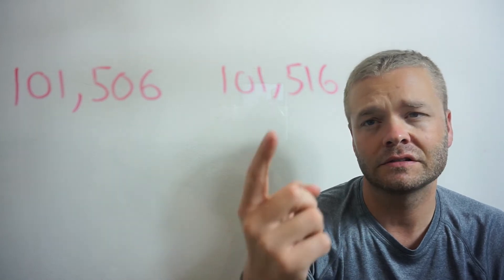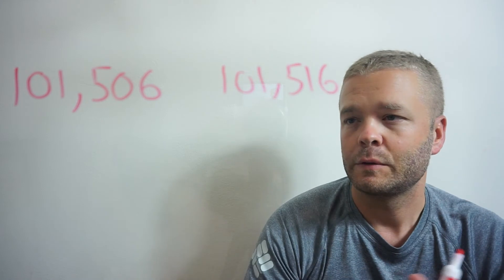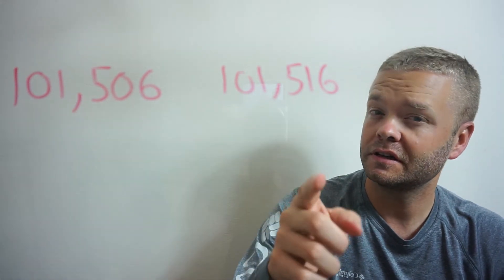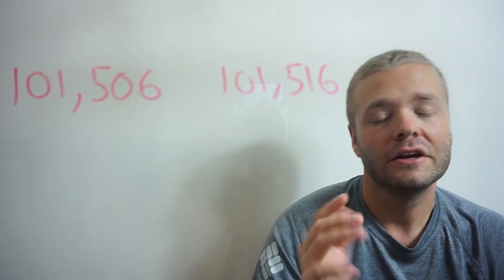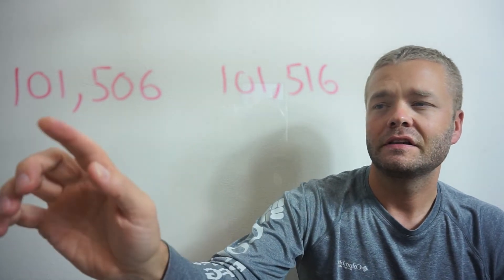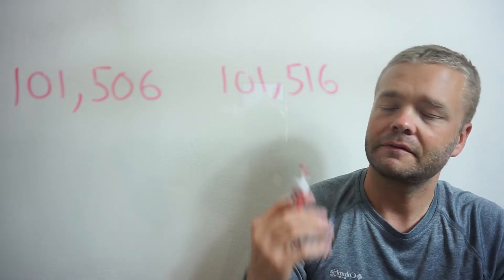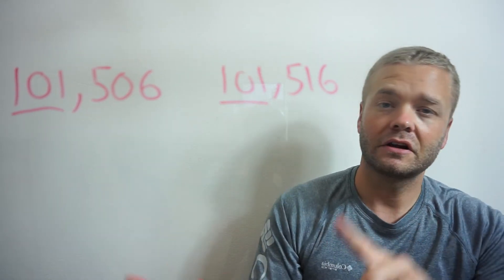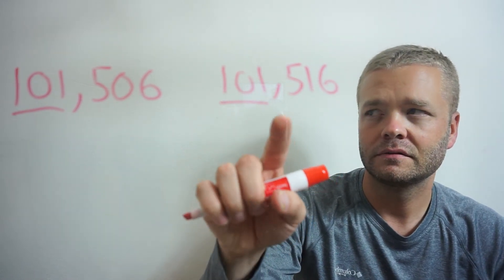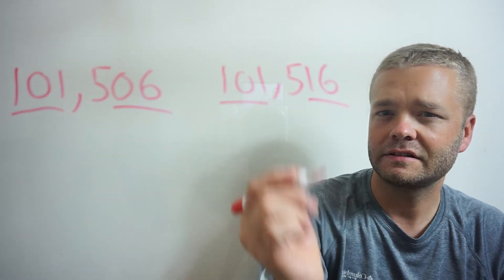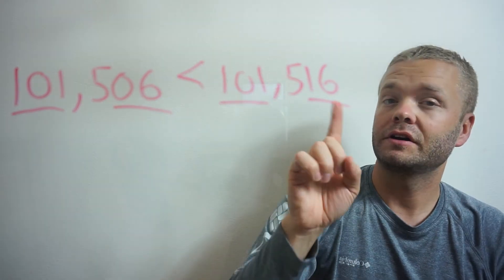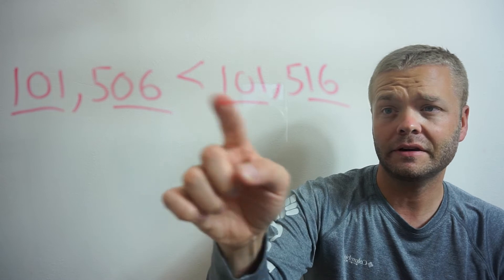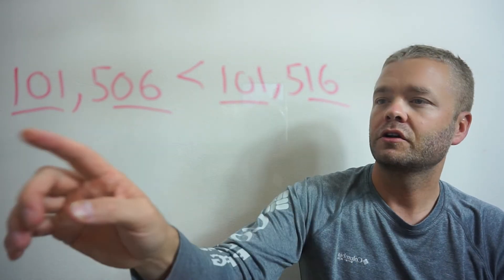What happens if you have bigger numbers? We have 101,506 and 101,516. Go to the biggest place value — both have a 1 in the hundred thousands. Same. Next: both have a 0 in the ten thousands. Same. Both have a 1 in the thousands. I like to group it by chunks — the ones period and the thousands period. That's 101,000 and 101,000 — the same. Next chunk: that's 500 and 500 — the same. Last part: that's 6 and 16. Sixteen is bigger, so 101,506 is less than 101,516.